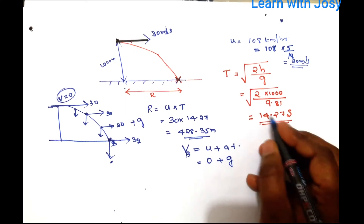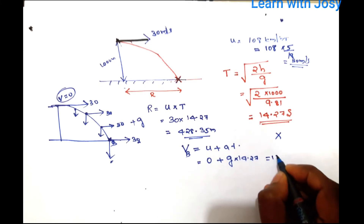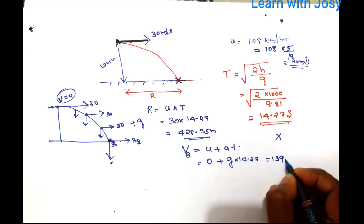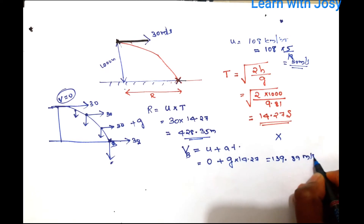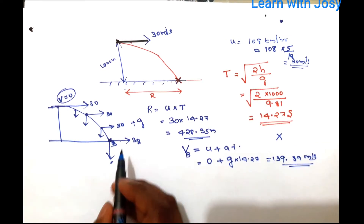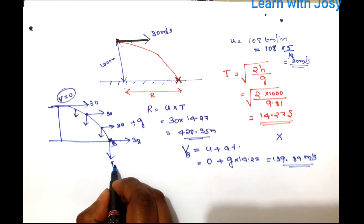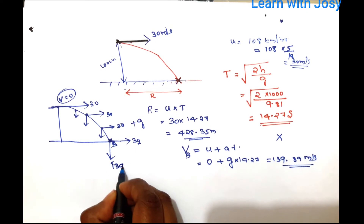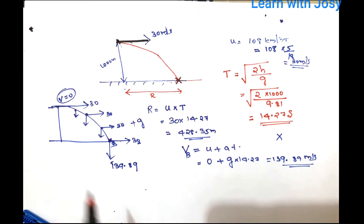Using t = 14.27 seconds, the vertical velocity v = g × t = 9.8 × 14.27 ≈ 139.89 meters per second. The horizontal velocity remains 30 m/s.